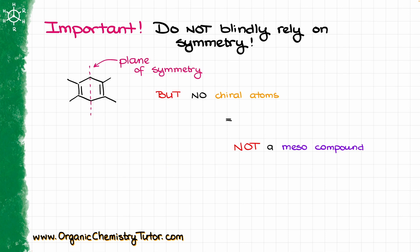So we have a molecule with chiral atoms that does superimpose with its own mirror image. So by definition that is a meso compound, although it does not have a plane of symmetry. But also, just because most meso compounds do have a plane of symmetry, don't blindly rely on the plane of symmetry in your determination.